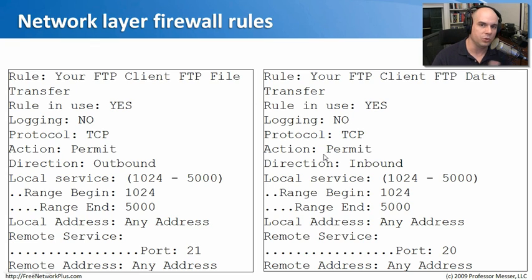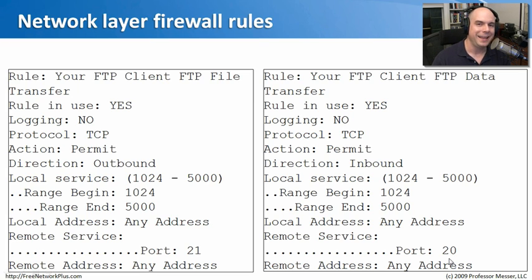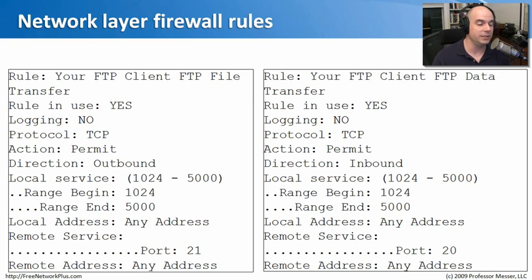FTP also uses port 20 and 21, so you need a separate TCP rule for port 20, and depending on the type of FTP, possibly a third rule opening more ports. An interesting problem: since I've opened port 21 and port 20, any application can flow across the network using those ports. I designed this for FTP, but all my firewall knows is TCP port 21 or 20 — it has no idea what goes on beyond that, because it is a network layer firewall.